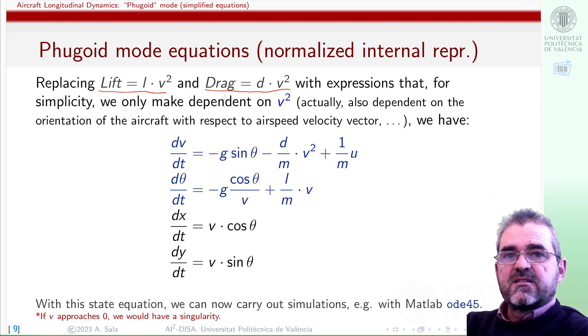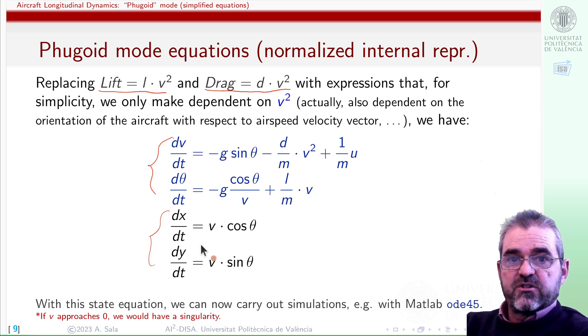But okay, for a fixed incidence angle we are assuming, we'll keep these coefficients as constants, so replacing lift and drag forces by this stuff, we were able to get this blue second order simplified equations of the fugoid motion of an aircraft, and of course, once we have v and theta, we can integrate them to simulate position as the bottom black equations.